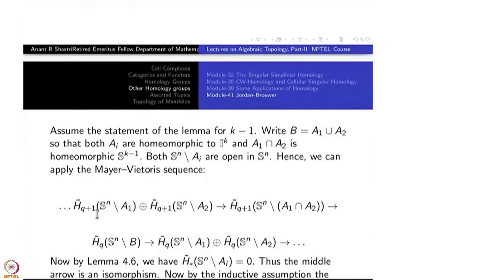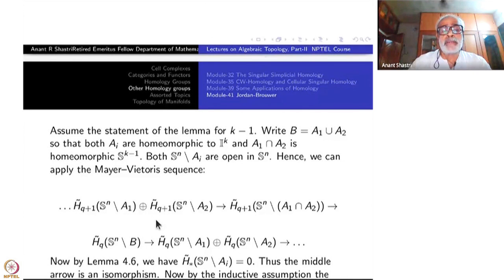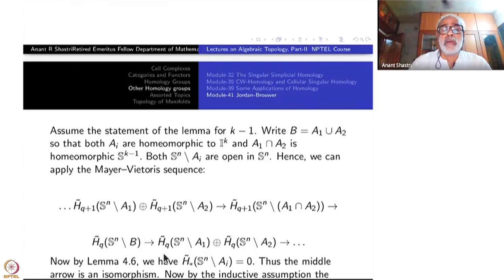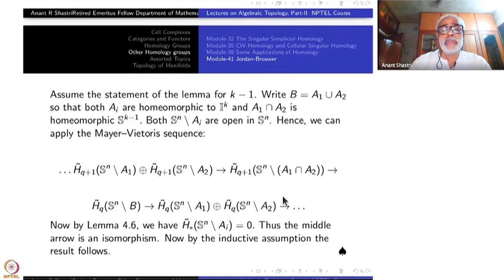Applying Mayer-Vietoris, we get: H̃_(q+1) of (S^n minus A1) direct sum (S^n minus A2), then H̃_(q+1) of S^n minus (A1 ∩ A2) — which is the largest set — then H̃_q of S^n minus B — the smallest set, which is the complement of the union — and then again H̃_q of the same direct sum term.